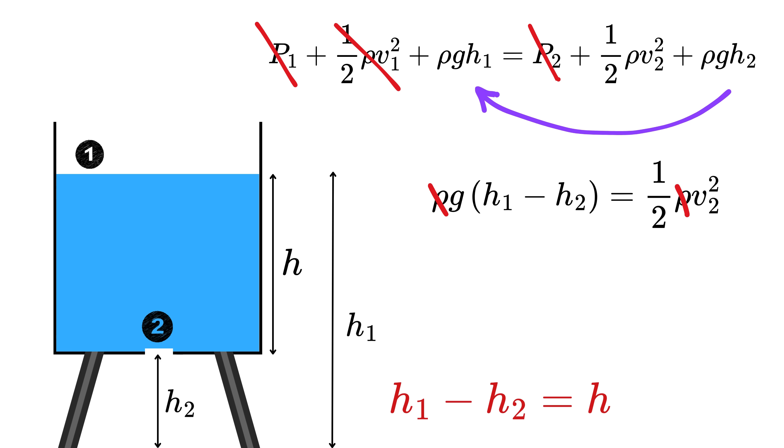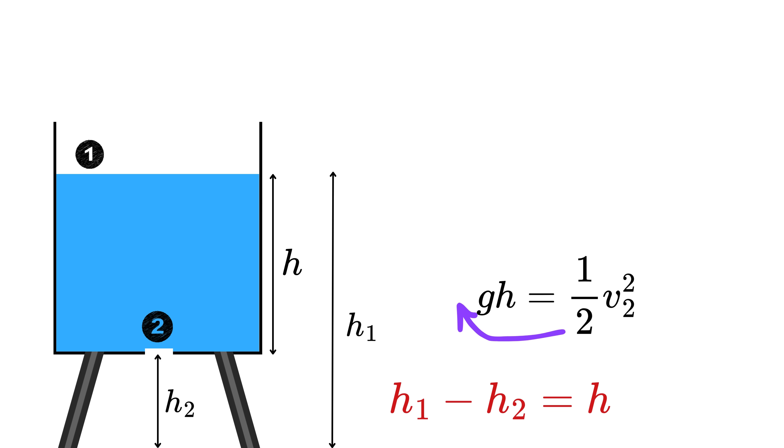Oh look, rho gets cancelled out as well, and this becomes G times H1 minus H2, or simply G times H. Next, take this 2 here and take square root on both sides to get V equals square root of 2 times G times H.